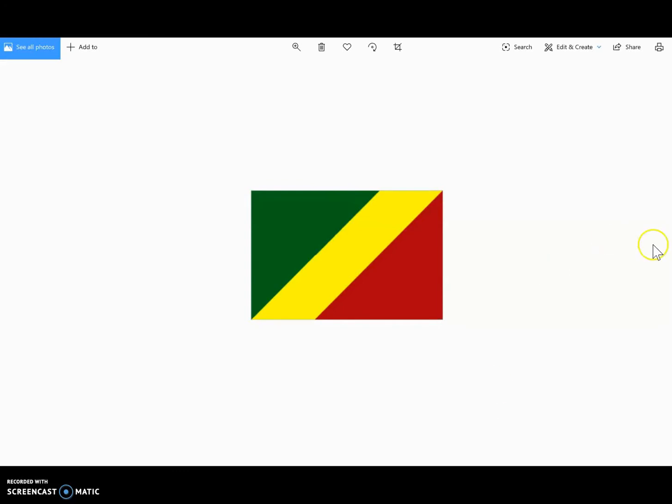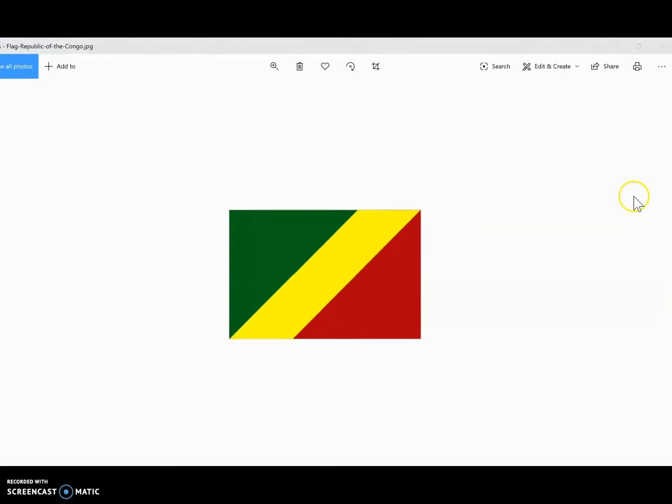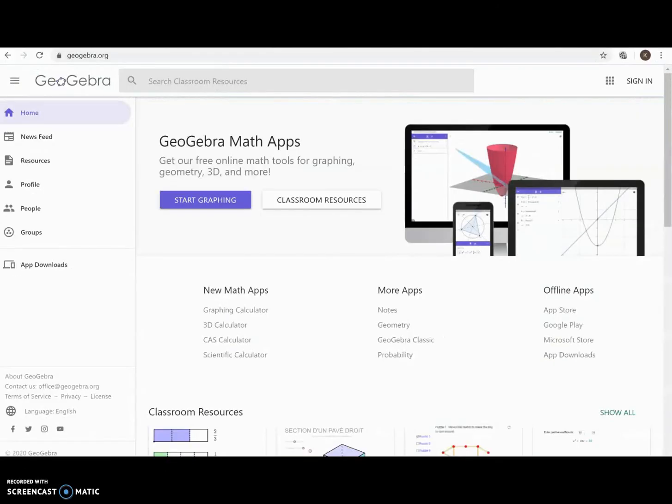Once we have saved that image, what I recommend that you also do is to go ahead and get out of that. If it opens up, go ahead. And next, we're going to go to GeoGebra.org, Geometry.